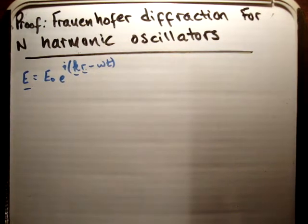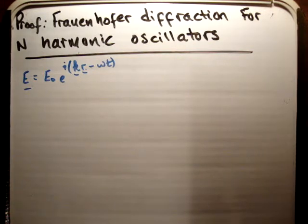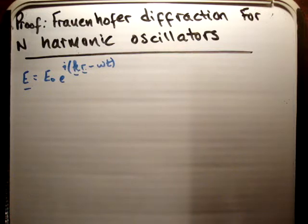In this video, I'm going to show you a proof of the Fraunhofer diffraction for n harmonic oscillators. This is a proof done in usual optics courses in college, so I'm pitching it at somebody who's done a small bit of college mathematics and also knows about things like superposition of waves.